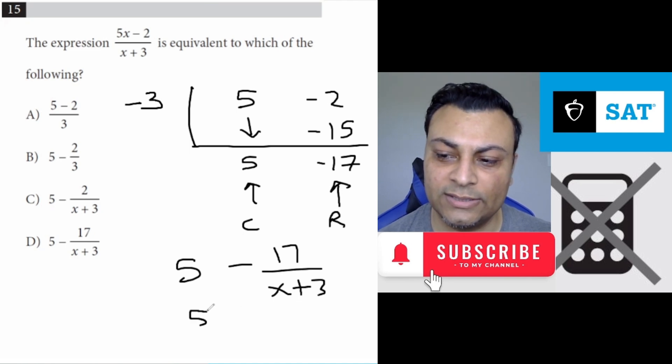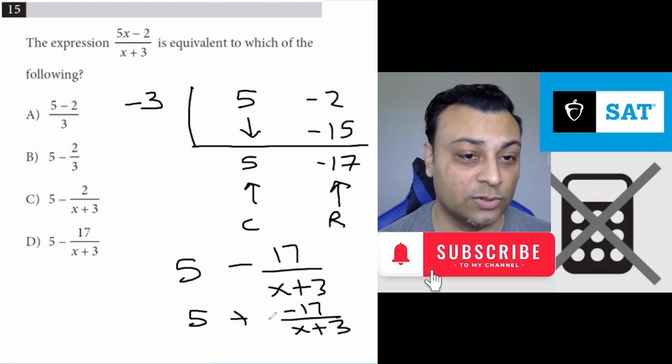You can also write this as 5 plus negative 17 over x plus 3, which is equivalent. But either way, you're going to get option D.